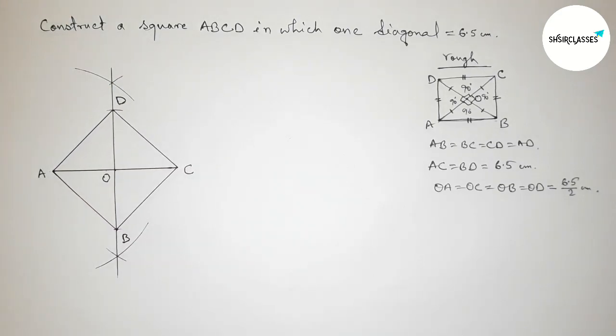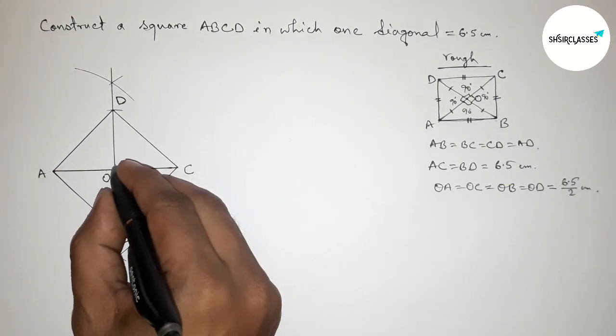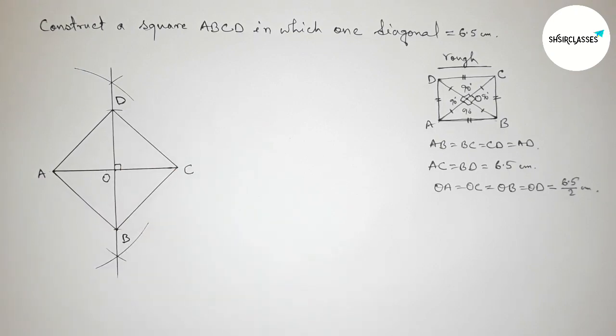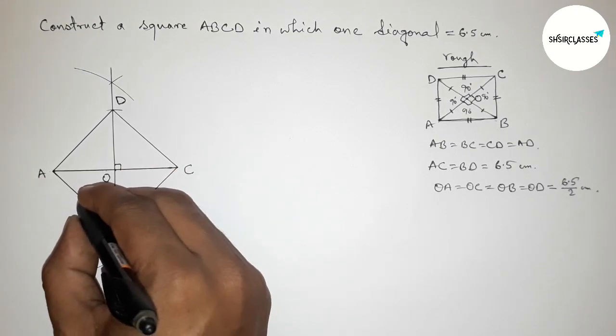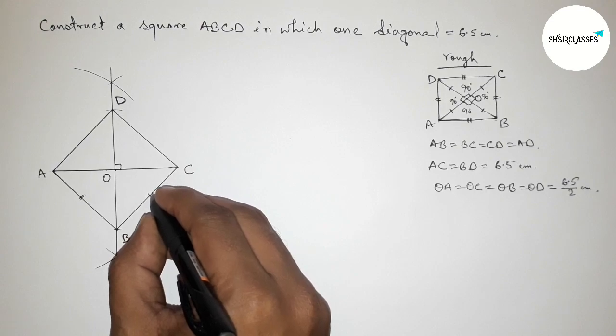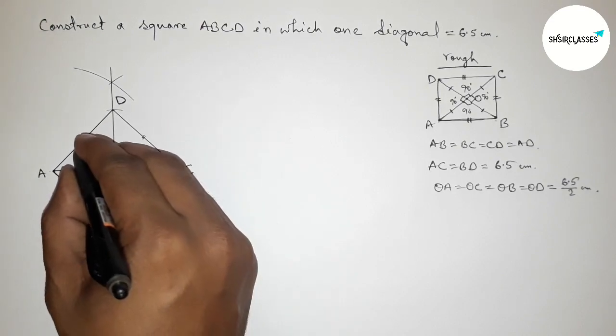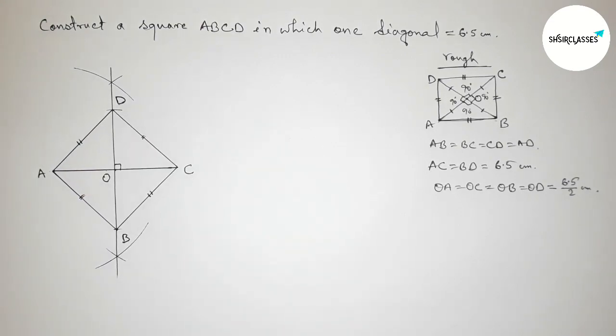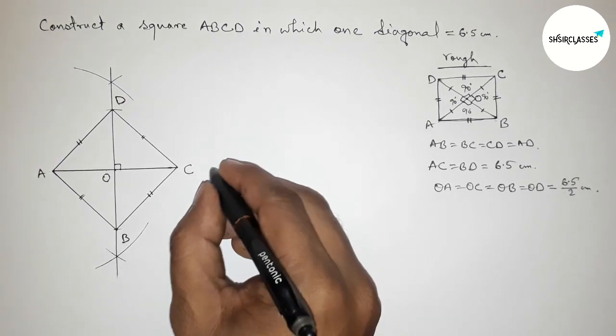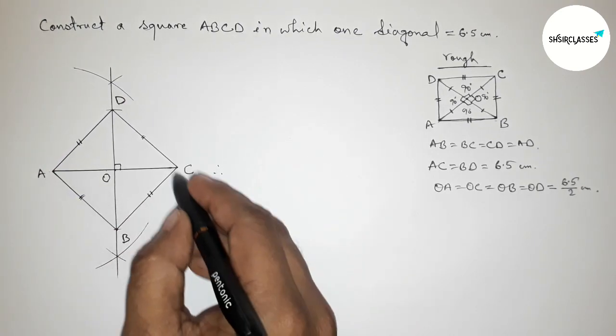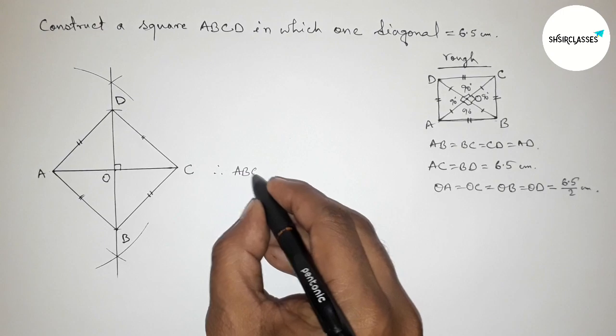Then last joining the line AD to get here a square ABCD. And here ABCD, and here always this is always 90 degree. Now all the sides of this square are equal.